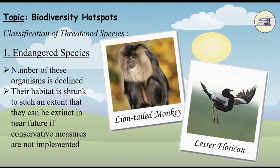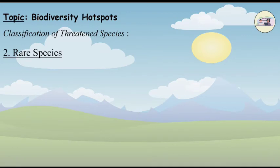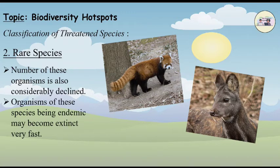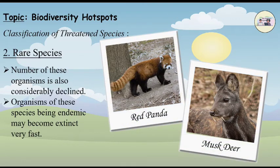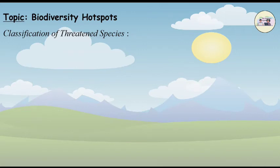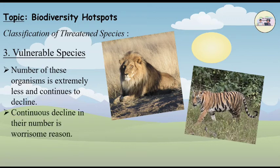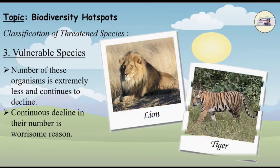2. Rare species: The number of these organisms is considerably declined. Organisms of these species, being endemic, may become extinct very fast. The number of these organisms is extremely less and continues to decline. Continuous decline in their number is a worrisome reason. Examples: tiger, lion.